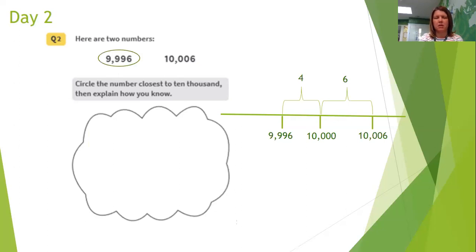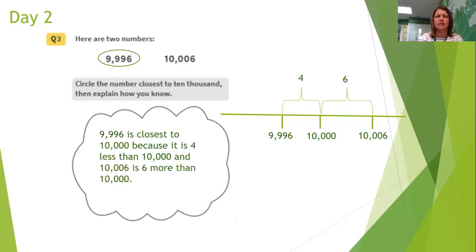If you've drawn a number line like that, that would be fine as your explanation. So I'm going to write 9,996 is closest to 10,000 because it is four less than 10,000. That's still not enough to write. I need to add and 10,006 is six more than 10,000. There's the solution to question two.